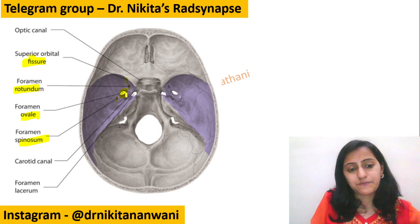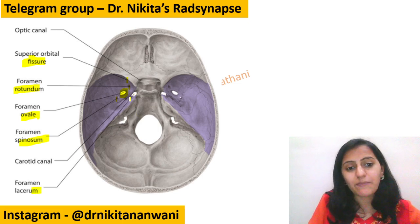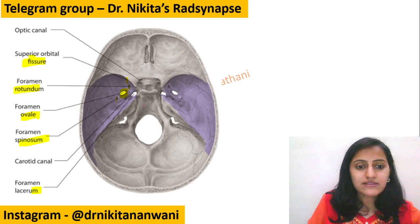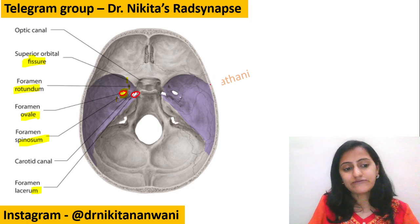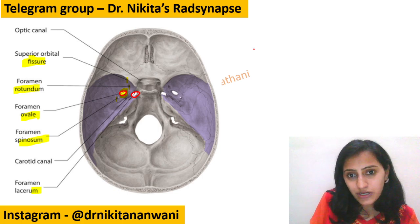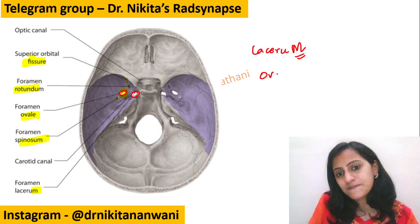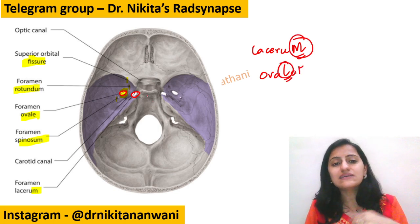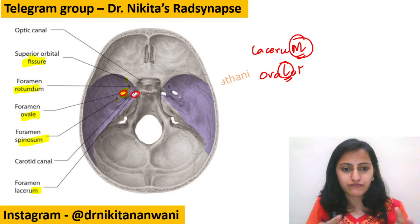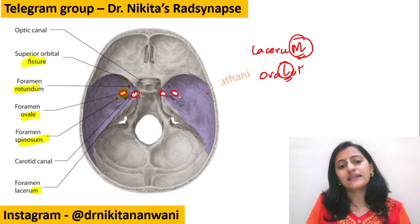Ovale is the largest one. Medial to ovale is foramen lacerum. Remember the medial one is lacerum and the lateral one is ovale — we can get confused there. Lacerum ends in M and ovale ends in L: lacerum is medial and oval is lateral. Both are the big foramina — lacerum medially, ovale laterally.